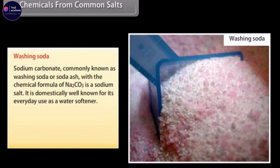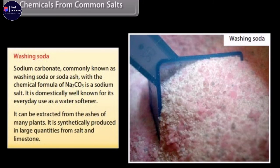Sodium carbonate, commonly known as washing soda or soda ash, with the chemical formula of Na2CO3, is a sodium salt. It is domestically well known for its everyday use as a water softener. It can be extracted from the ashes of many plants. It is synthetically produced in large quantities from salt and limestone.